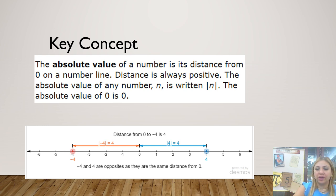So this is the symbol that we use to find the absolute value: two parallel lines.